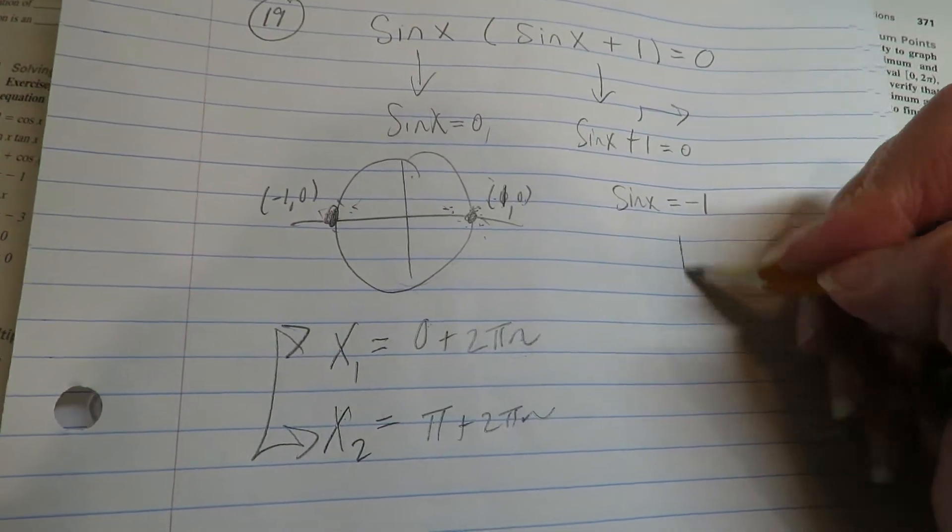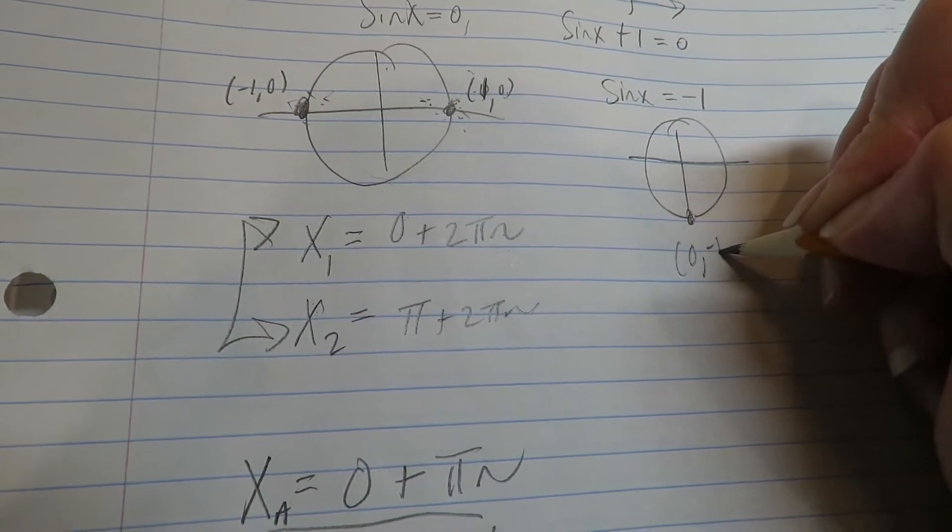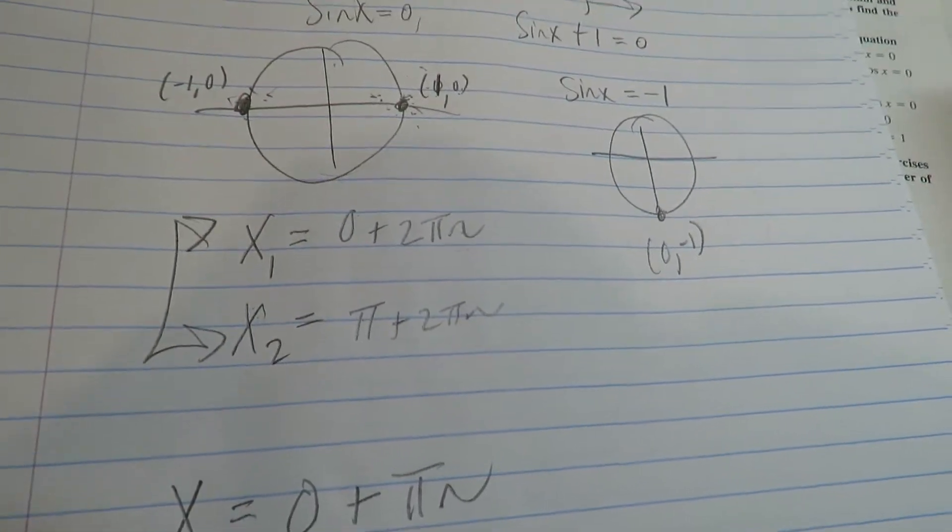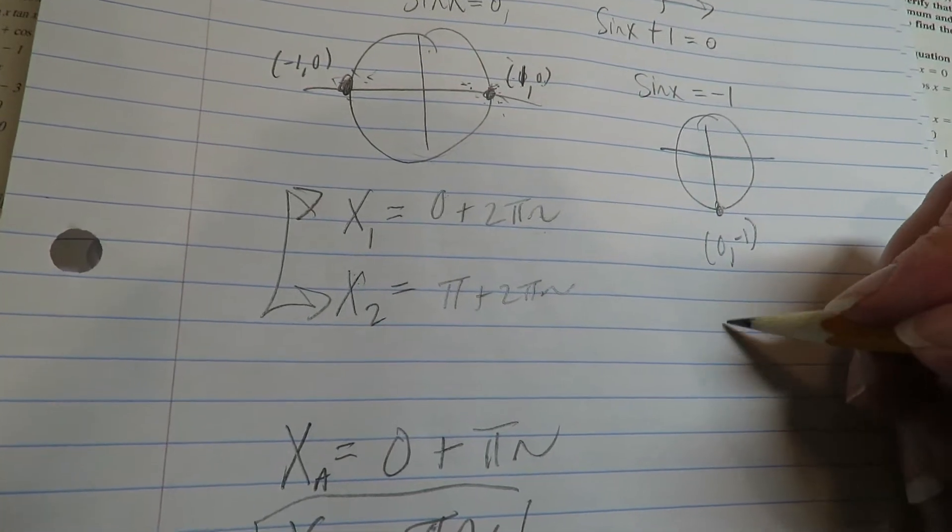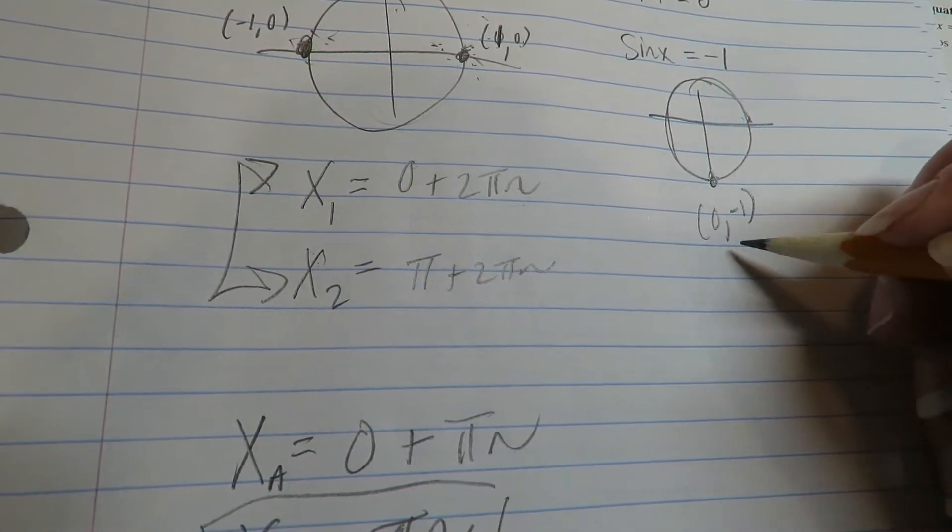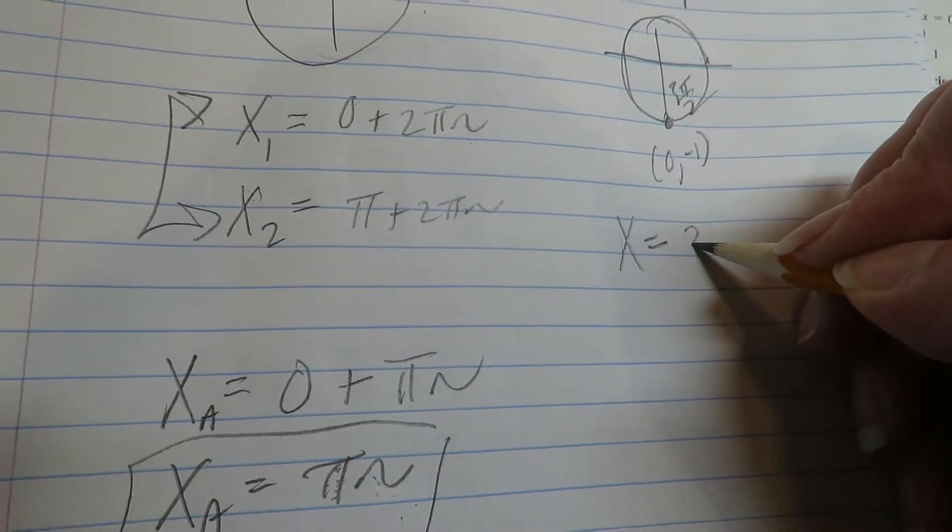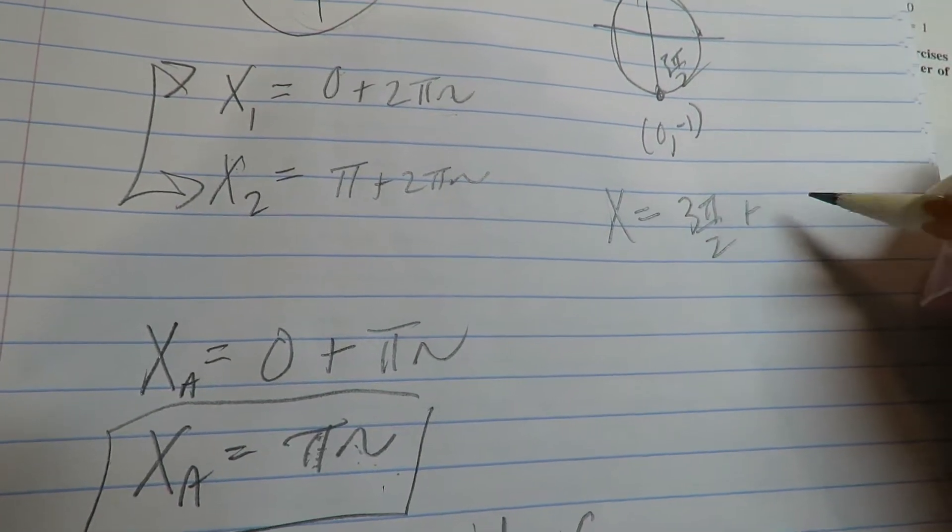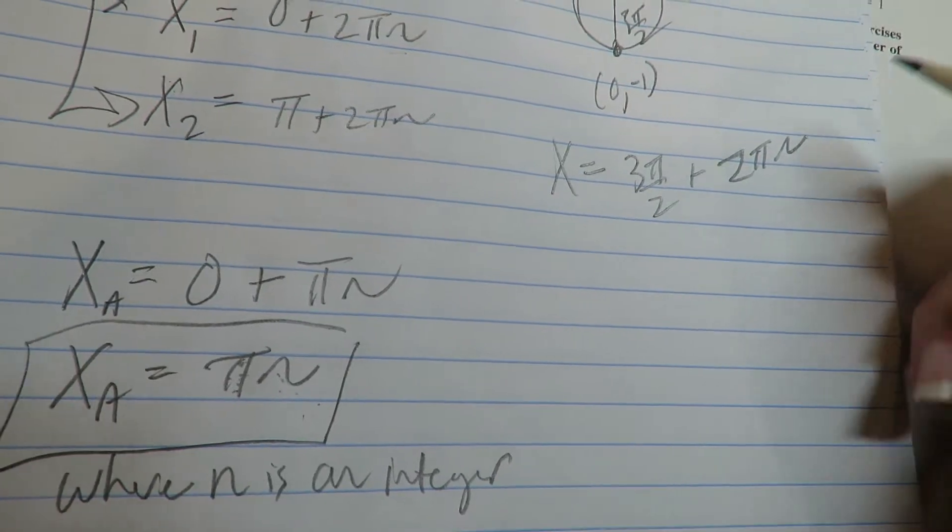All right, over here, when the sine is equal to negative one, that's a similar concept. That has to be the unit circle. Because that's the only time the sine equals negative one. A triangle won't give you that. All right, so for this one, you have to start at zero. You revolve to here. This is an angle of three pi over two. So this would be x is three pi over two plus all its coterminal angles.